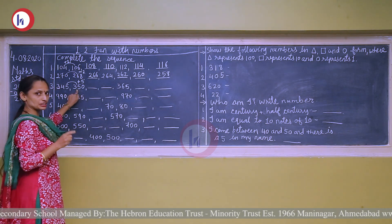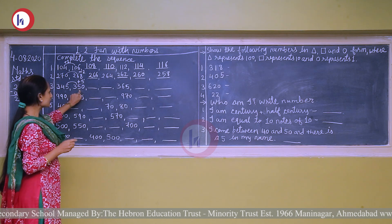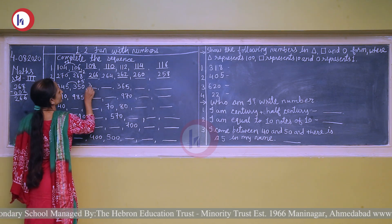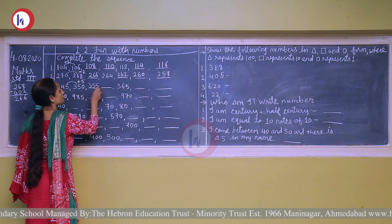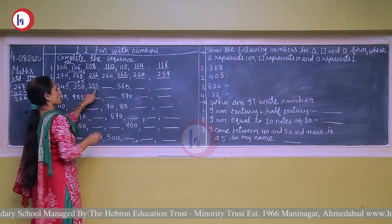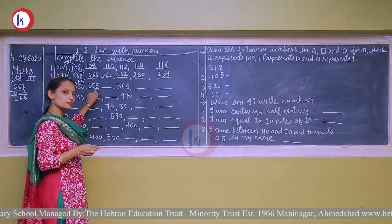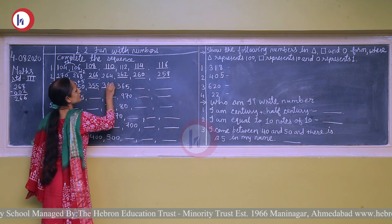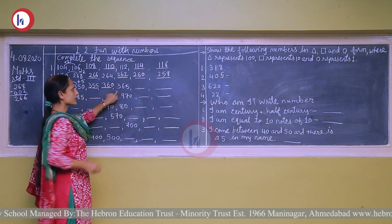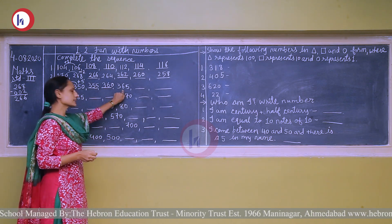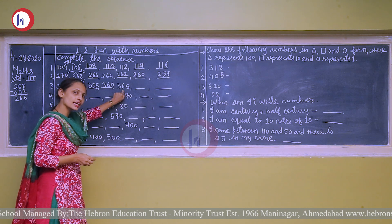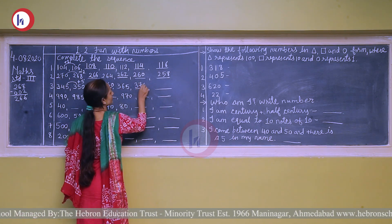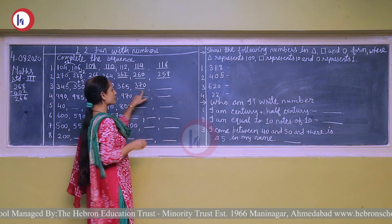So we add 5 each time. 350 plus 5 is 355. 355 plus 5 is 360. Again add 5, we get 365. Again add 5, we get 370.